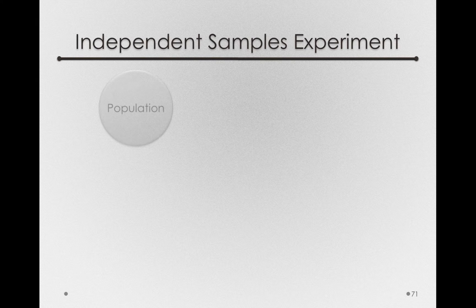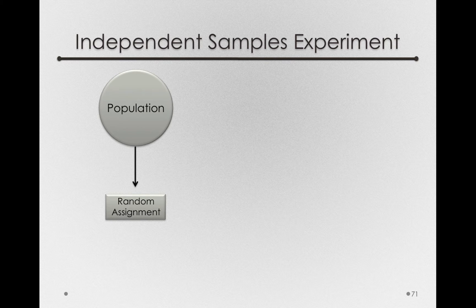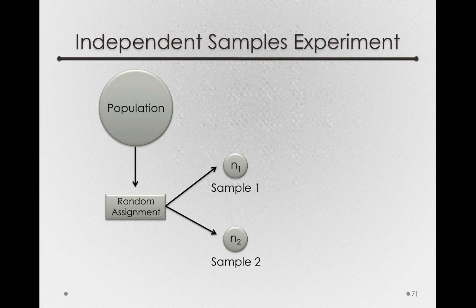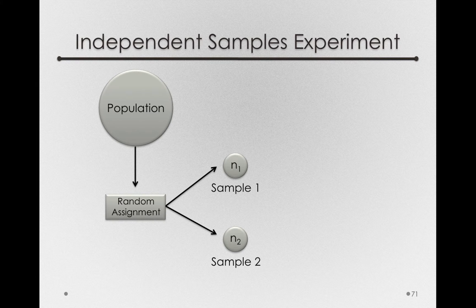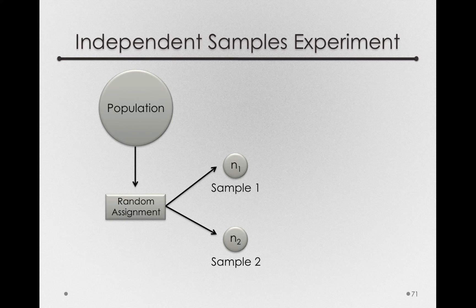Let's look at this experimental design in more detail. In this case, we'll have a population, and by way of random assignment, we'll form two groups: sample 1 with n sub 1 individuals and sample 2 with n sub 2 individuals. Notice that we have to add subscripts to keep straight what sample we're talking about, so for everything we obtain going forward, we'll have subscripts referring to sample 1 and sample 2. For now, let's assume sample 1 is the placebo and sample 2 is our actual drug.